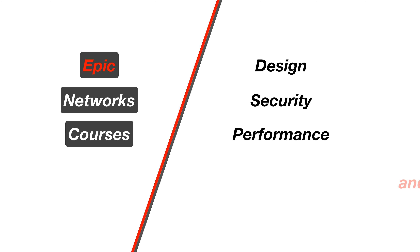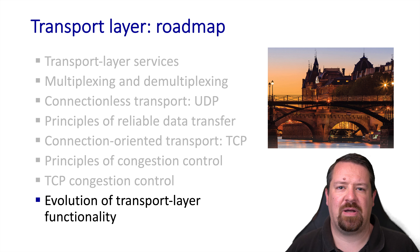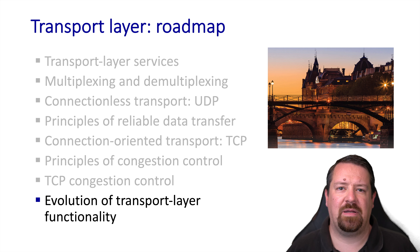In this video, we'll look at how transport layer functionality has evolved beyond traditional TCP mechanisms in recent years. Some of that development has left TCP behind and adopted reliability and congestion control mechanisms on top of UDP, and in this video we'll look at some of this development.